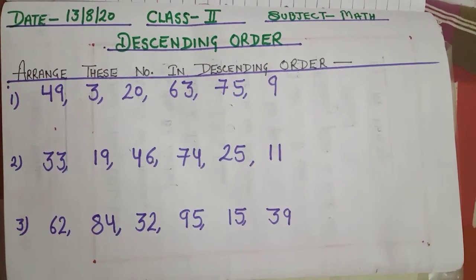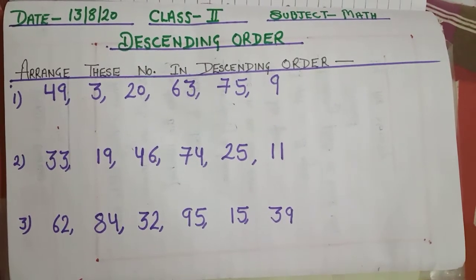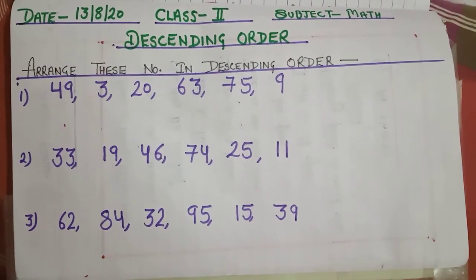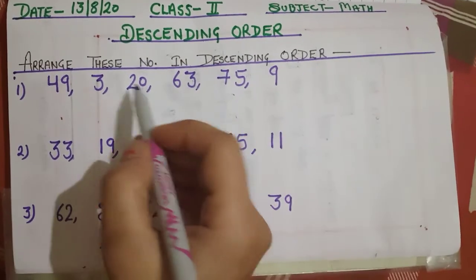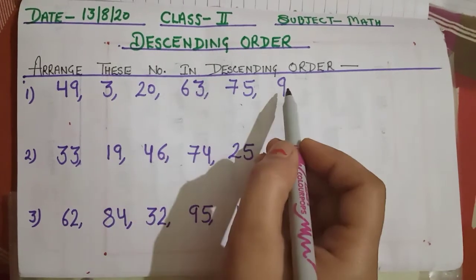When we arrange numbers from the greatest to the smallest, we call it descending order. Let us arrange these numbers in descending order.